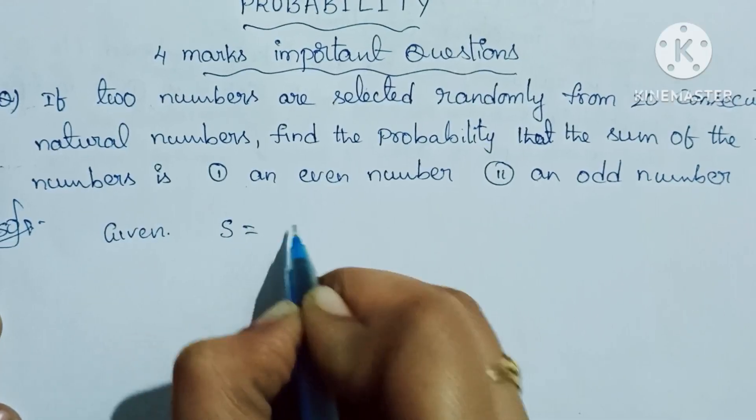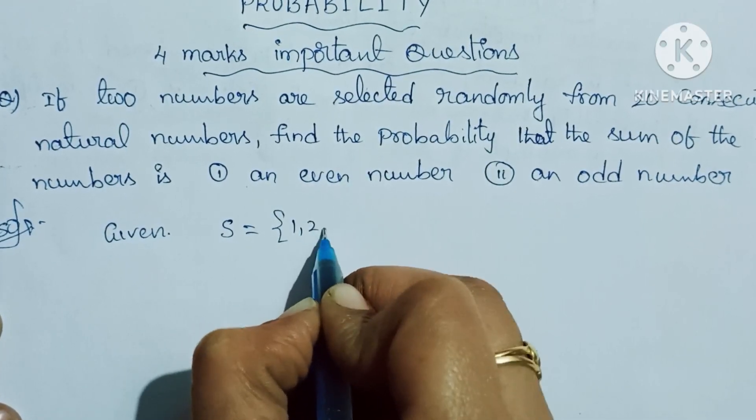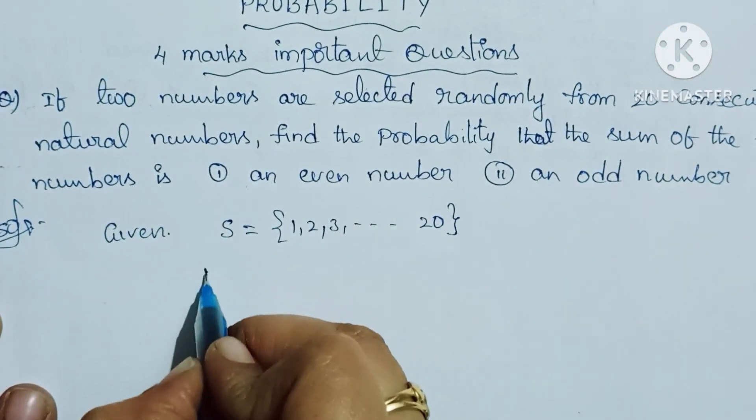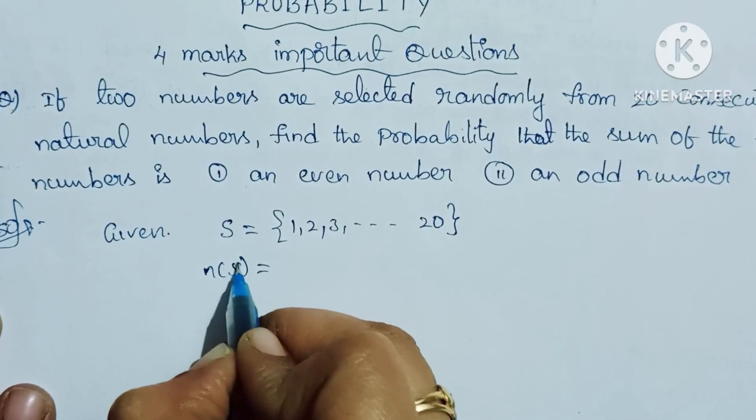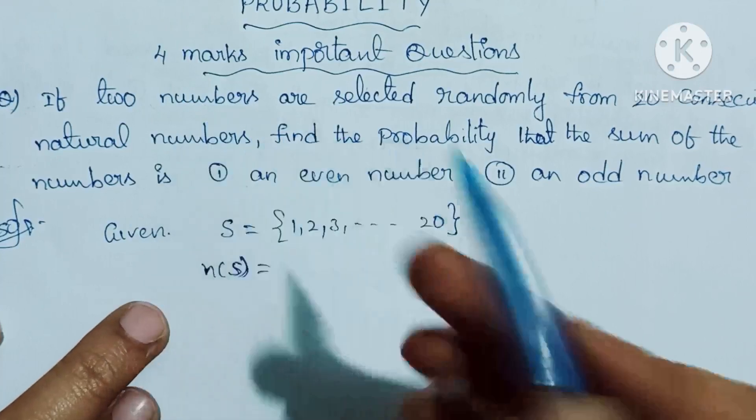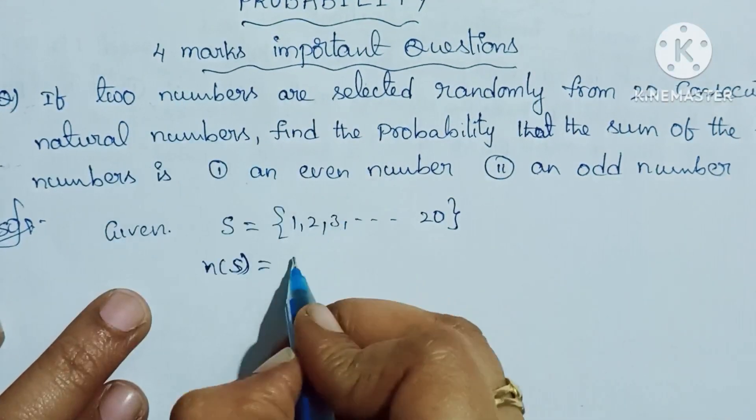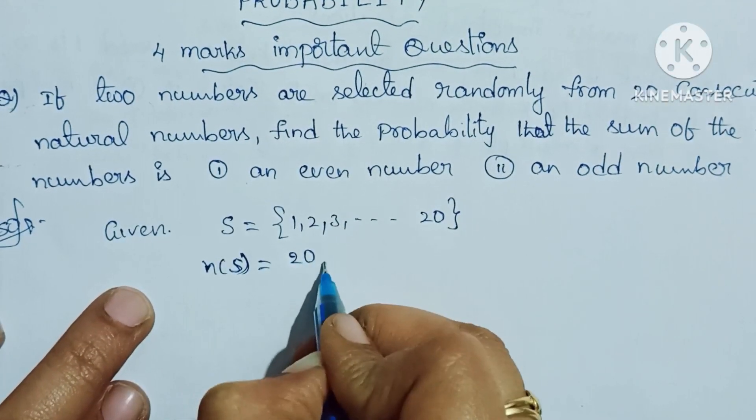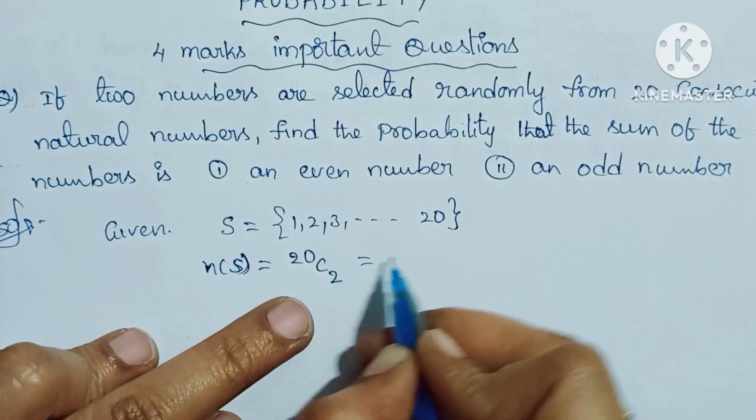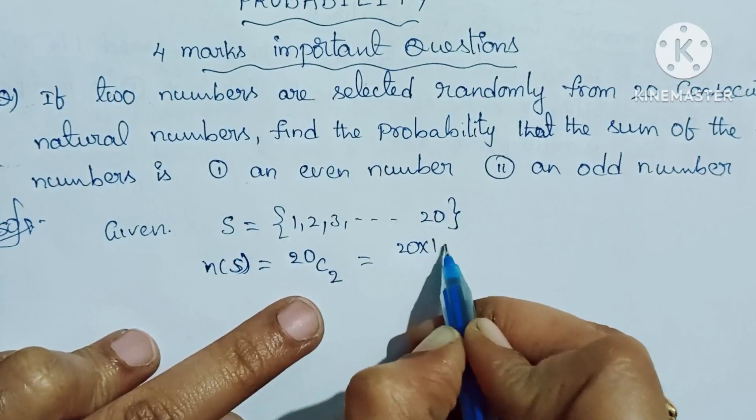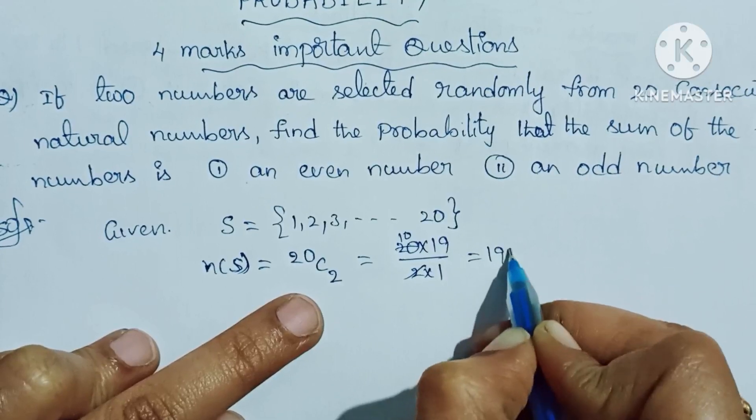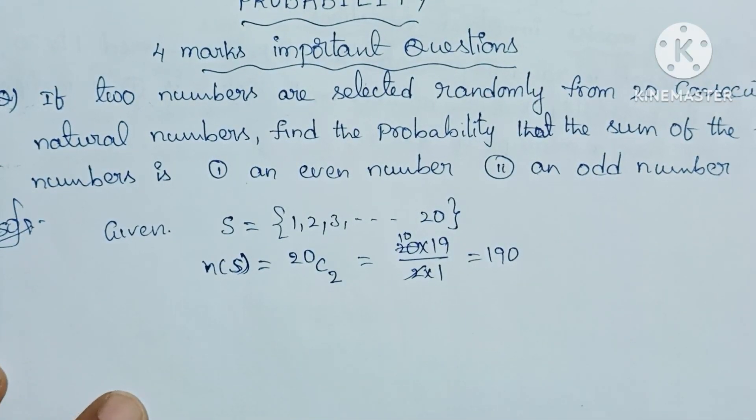Given: S = {1, 2, 3, 4, ... 20}. n(S) = 20C2. We need to select 2 numbers randomly from 20 consecutive numbers, so 20C2 equals 20 times 19 by 2 times 1, which equals 10 times 19. n(S) = 190.